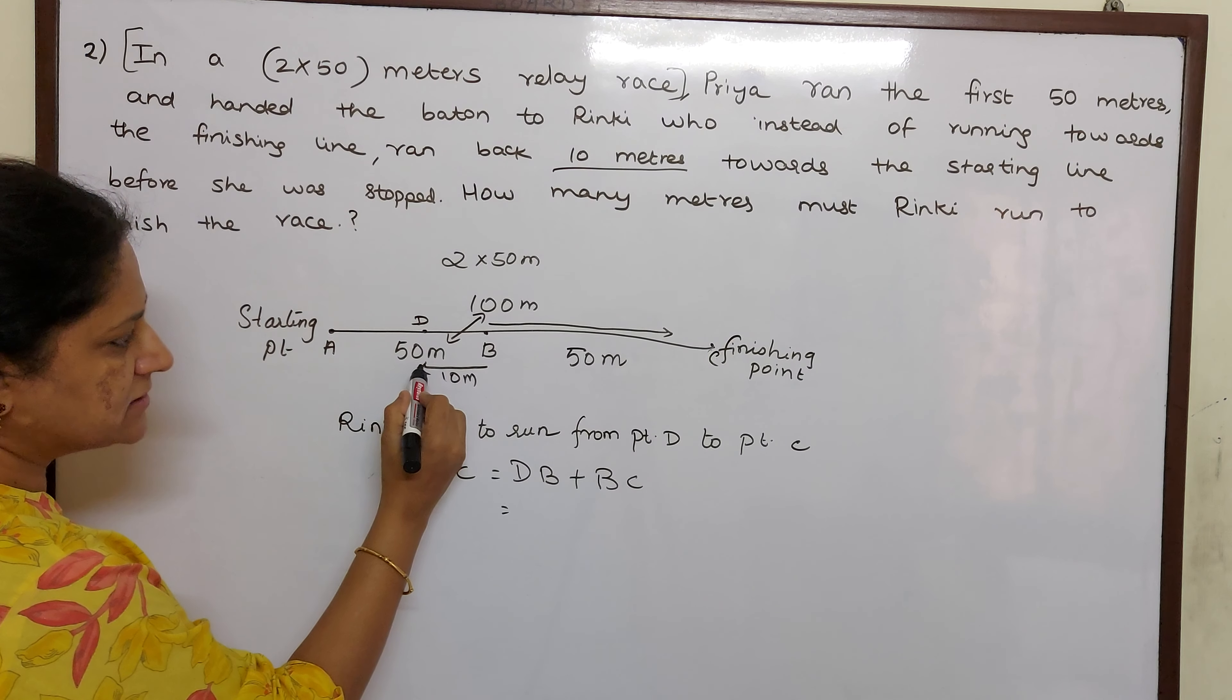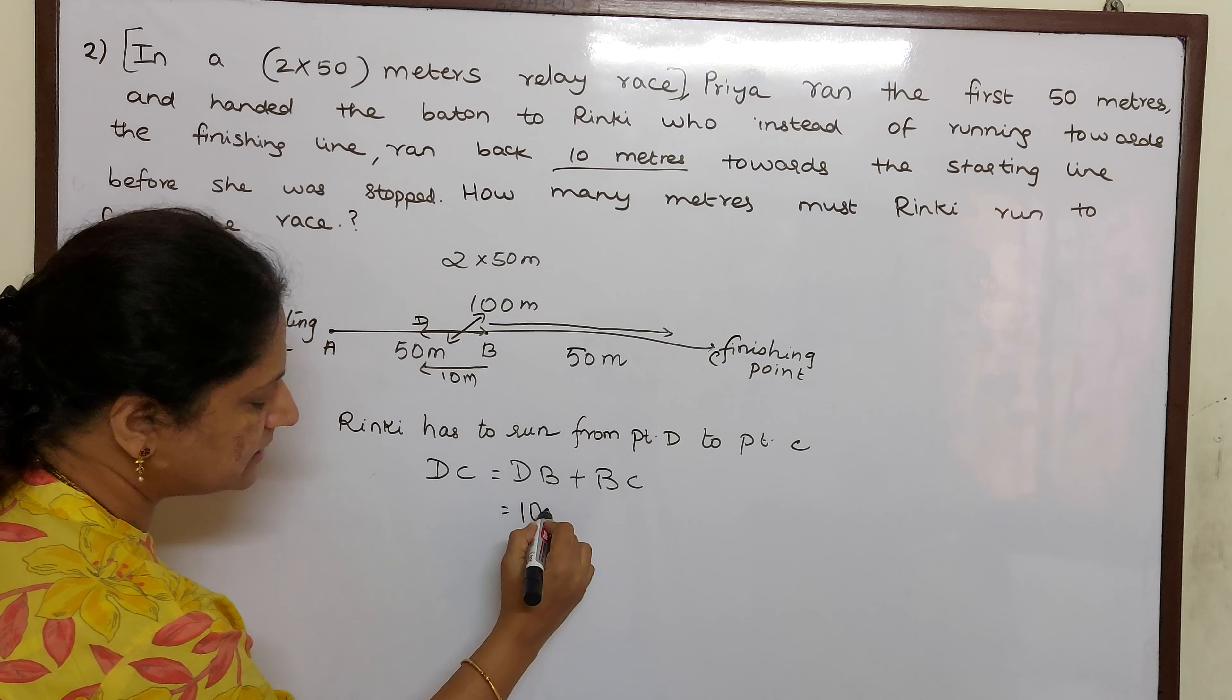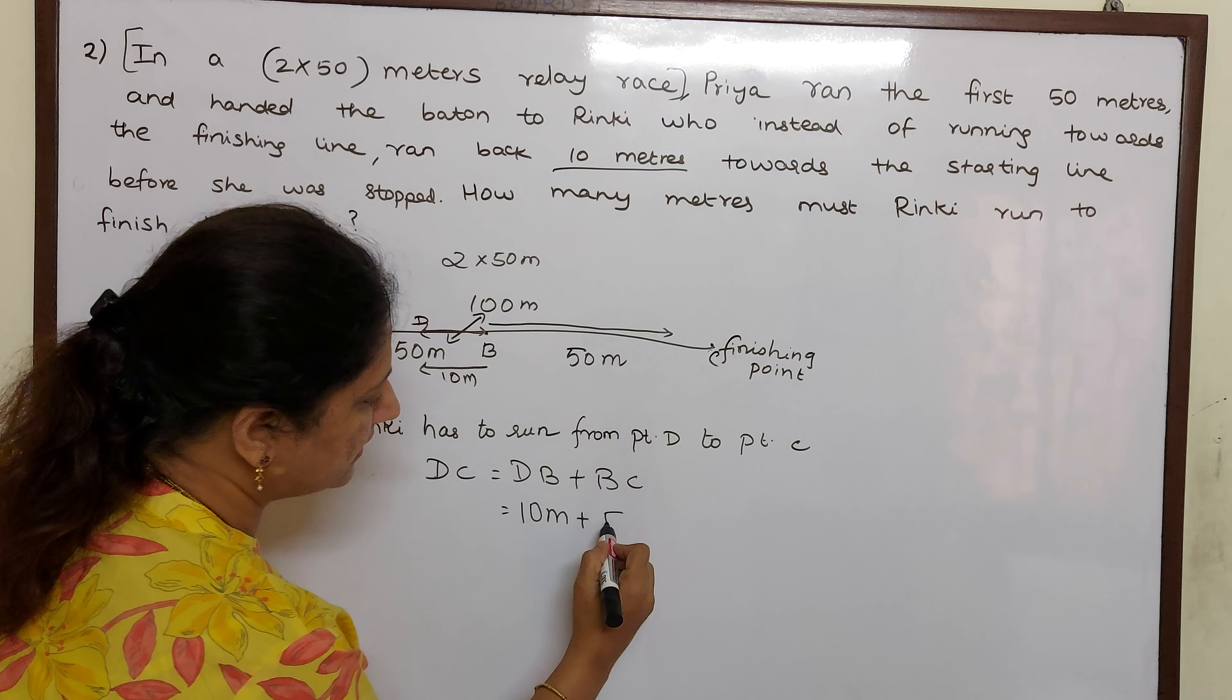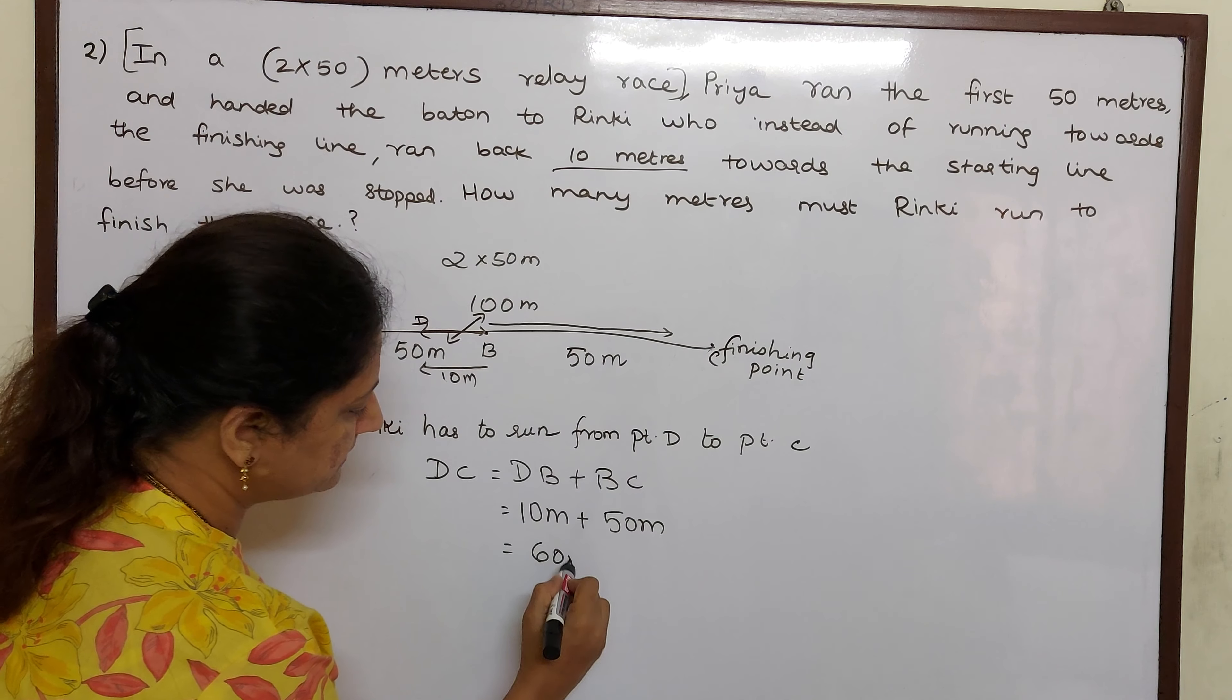So how much is DB children? From D to B, she ran 10 meters. So that is 10 meters. Plus BC, what she had to initially run? 50 meter. So totally 60 meters.